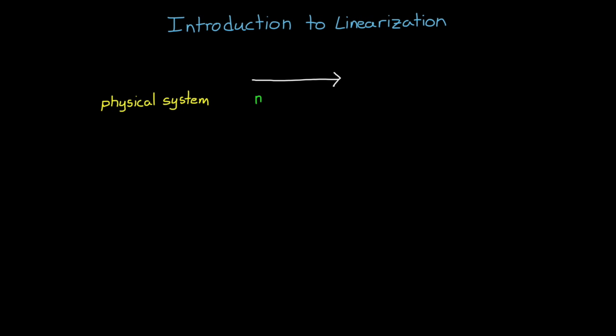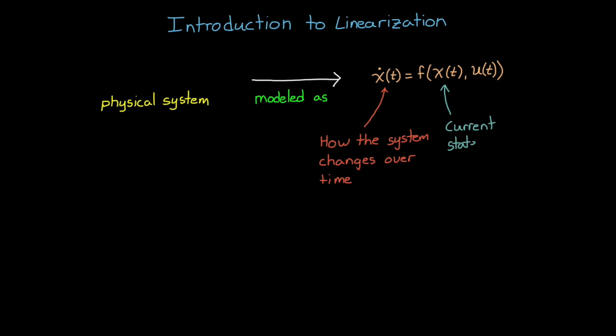Consider a physical system that's modeled as a differential equation in the form x-dot is a function of x and u. What this means is that how the system changes over time depends on the current state of the system and the external inputs into the system. And this could be things like external forces and torques and energy and so on.